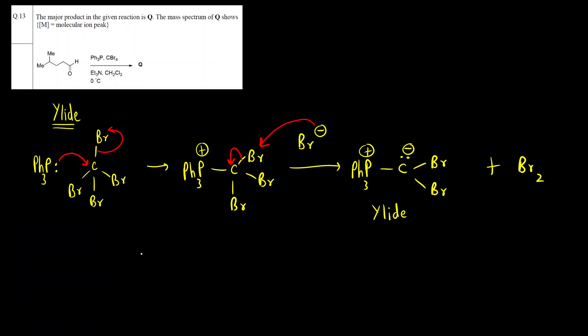Now this ylide will react with the aldehyde. PPh3 plus C minus Br Br. Okay so this I can write it like this aldehyde then there are one two carbons and then there is methyl and methyl. So what will happen this will attack the carbonyl carbon. This will open up.